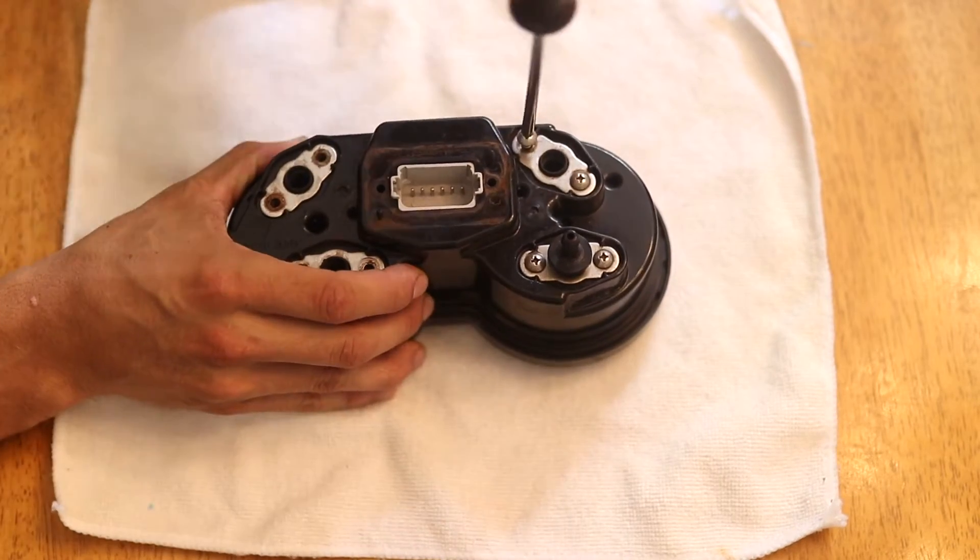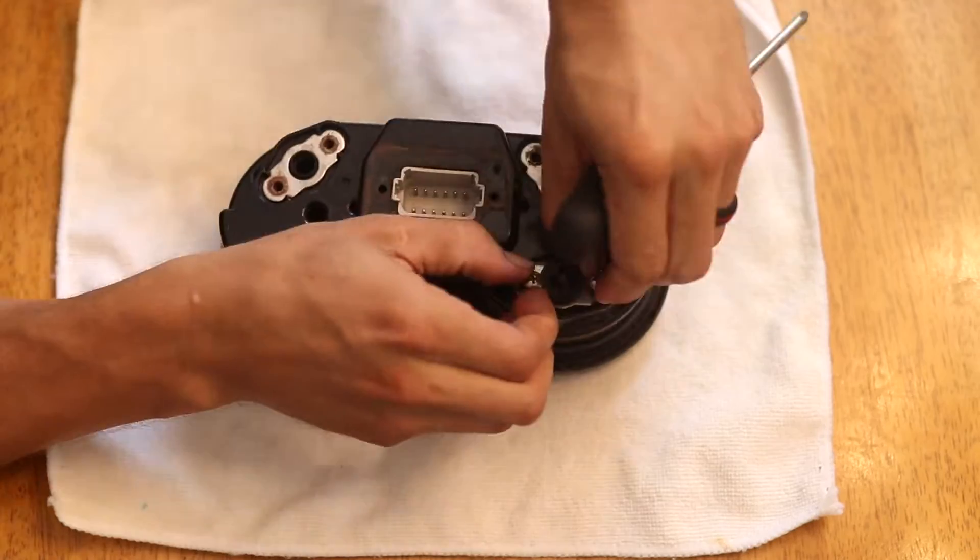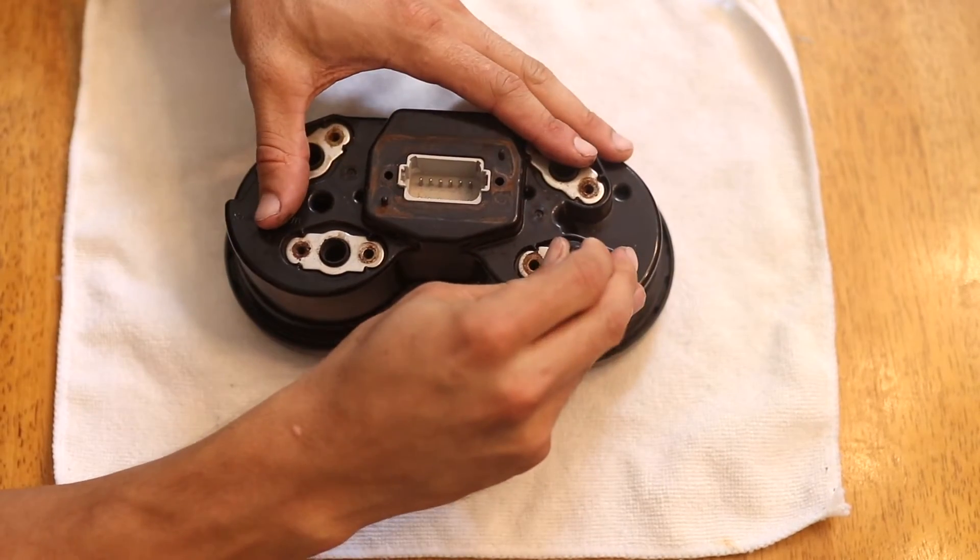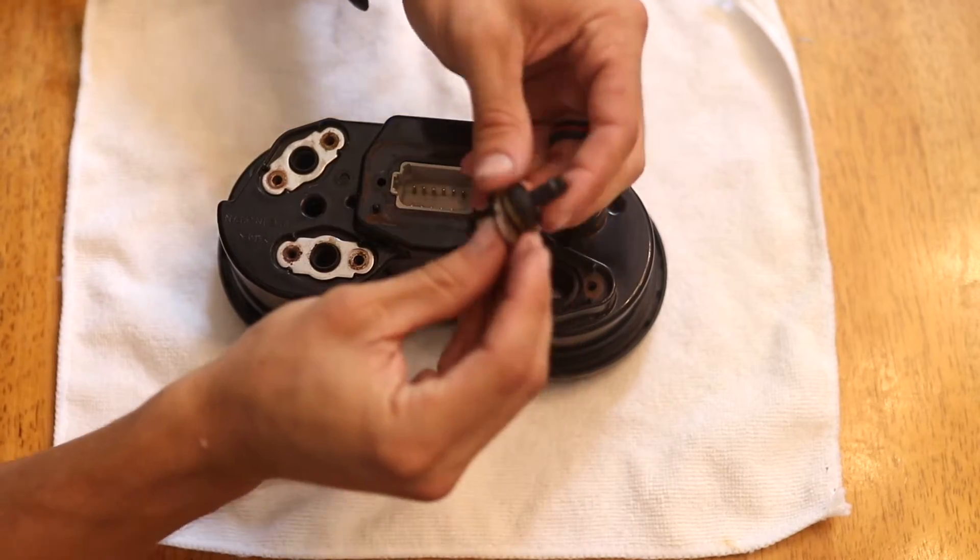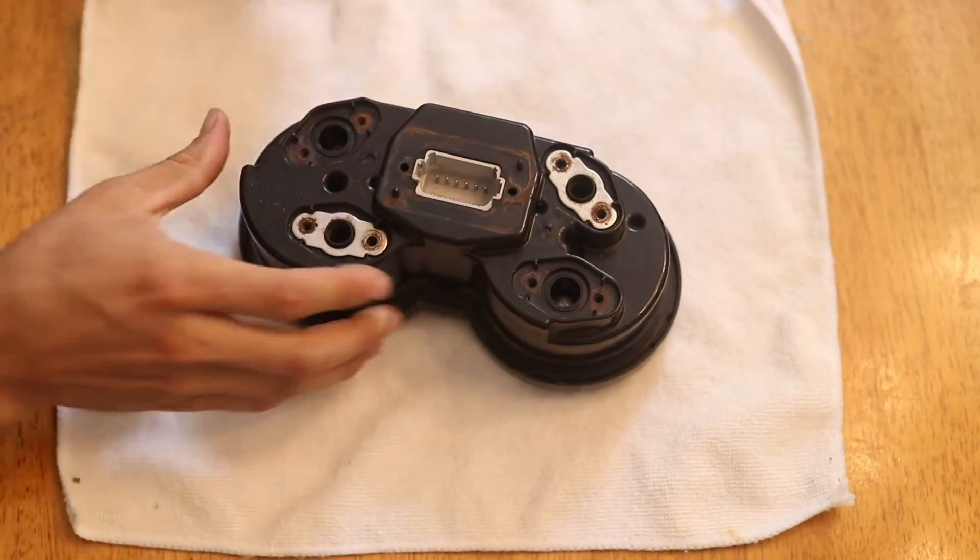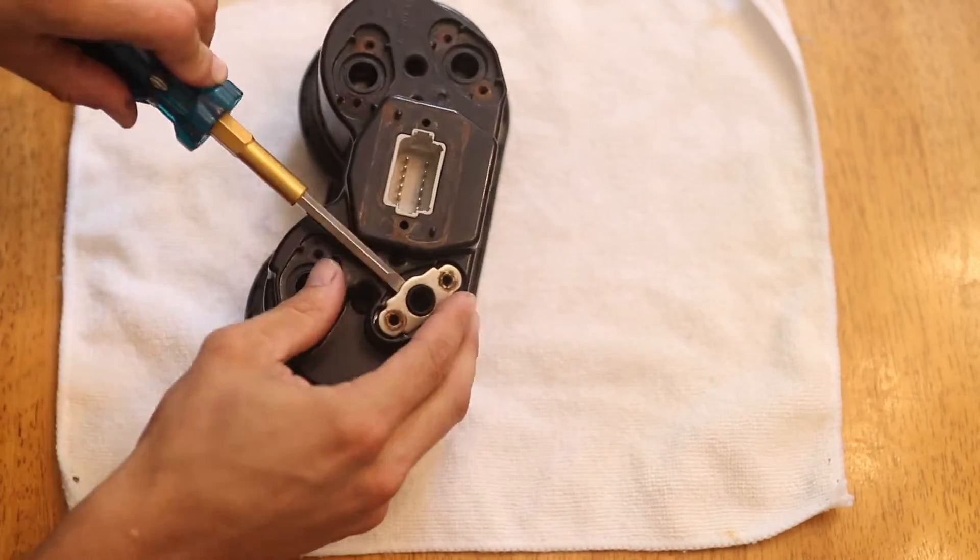To start off with, I simply removed all ten of the screws holding the metal plates on the back of the gauge cluster. Removing these reveals four additional screws that hold the circuit board onto the plastic housing.